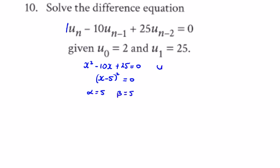Since u_n has a double root, the solution form is u_n = L·α^n + mn·α^n.